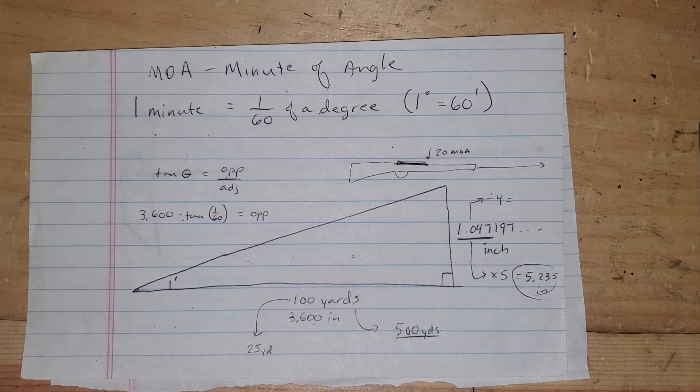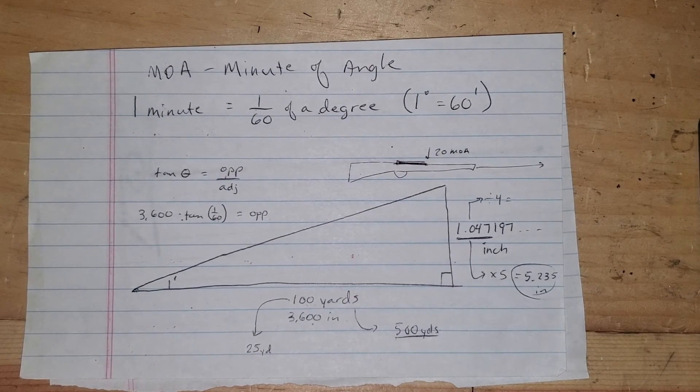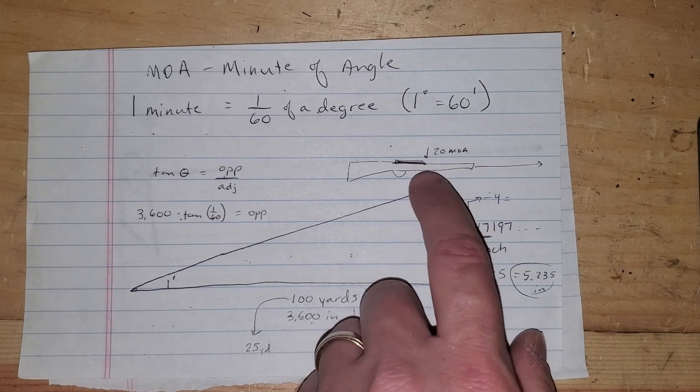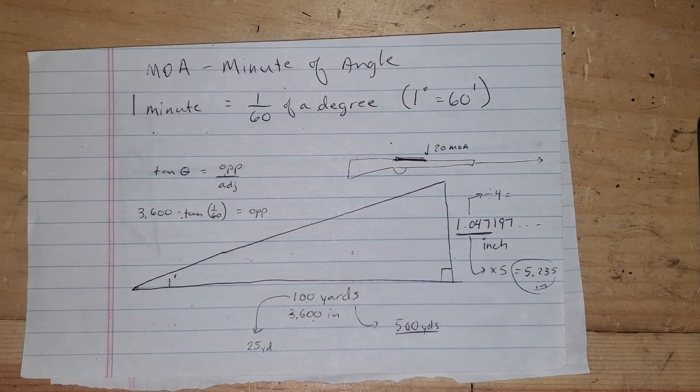The idea behind this 20 MOA rail is that you get more vertical adjustment out of a cheaper scope. You don't have to have as many clicks in your scope to hit a target at a thousand yards because of this angle that's built into your rail.